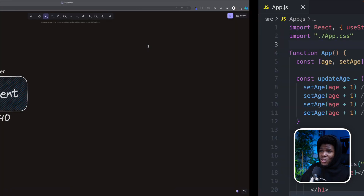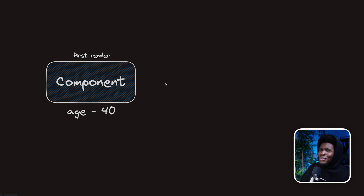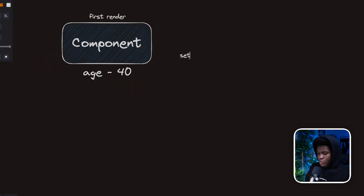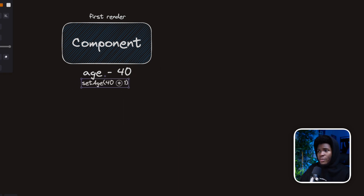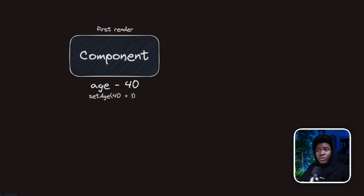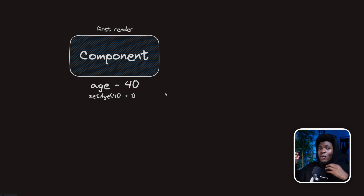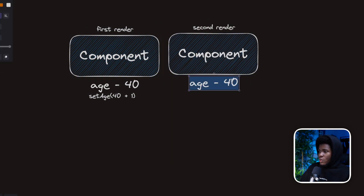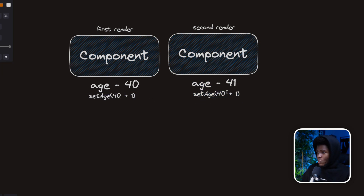To understand this, I'm going to use a diagram — you need to understand how the useState hook works. When your component is rendered the first time, you have an age state of 40. When you do setAge(40 + 1), which is setAge(41), the age state for this first render is still going to stay at 40. setAge does not update the age state for the current render — it will only update that state for the next render. So in the second render, age is now going to be 41, and if again you have setAge(41 + 1) which is 42, that is going to be for the third render.